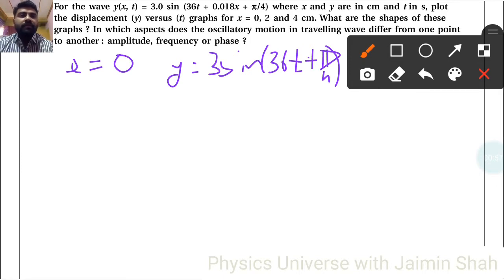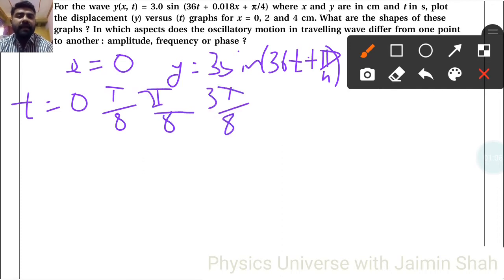Now, for 36t plus π/4, if we divide time into 8 different parts: 0, then T/8, then 2T/8, then 3T/8, and so on.